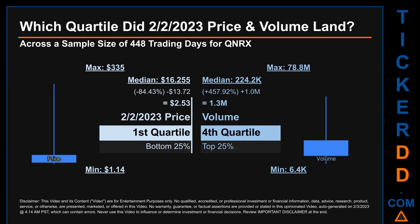Hello, my name is Maria. Which quartile did the 2nd of February 2023 price and volume land? Across a sample size of 448 trading days, the maximum end-of-day price for QNRX was $335 while the minimum was $1.14. Within that price range, the 2nd of February 2023 price of $2.53 landed within the first quartile, meaning it was within the bottom 25% of all sampled end-of-day prices.